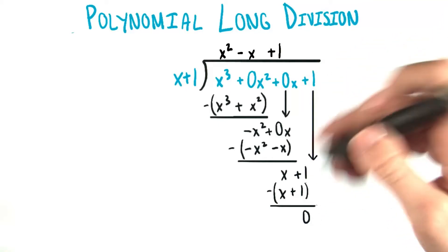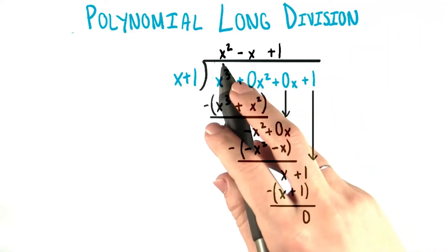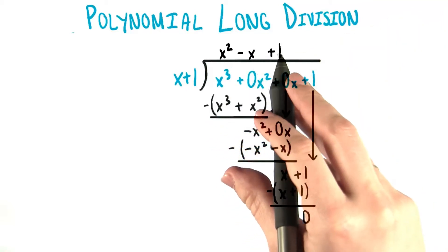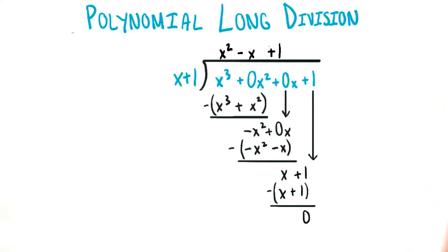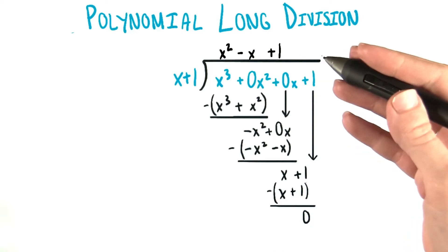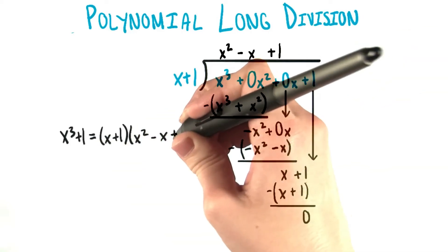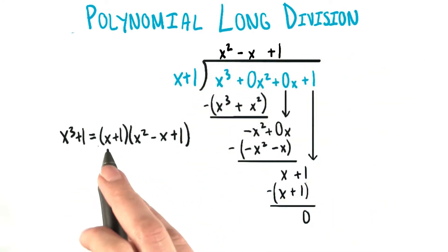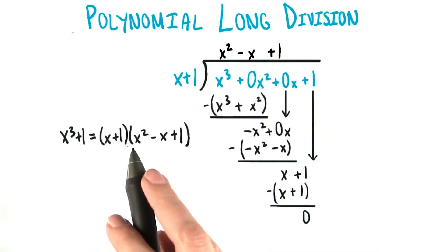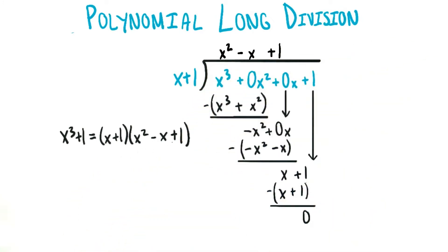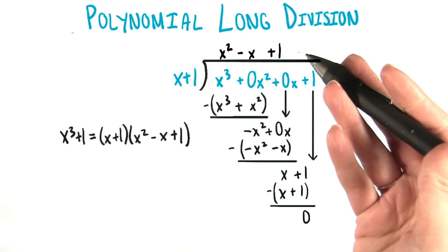When we go through the steps of long division, we end up with x squared minus x plus 1 as our answer. Again, this matches a rule that we learned earlier when we were factoring. You learned that x cubed plus 1 is equal to x plus 1 times x squared minus x plus 1. And that's exactly what we found here.